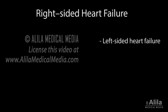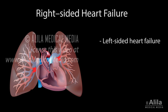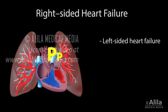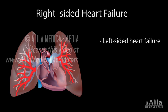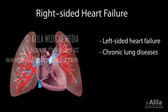Right-sided heart failure is most commonly caused by left-sided heart failure. This is because the increased pulmonary pressure caused by left-sided heart failure makes it harder for the right ventricle to pump into the pulmonary artery, resulting in systolic dysfunction. In compensation, the right ventricle grows thicker to pump harder, which reduces the space available for filling, eventually leading to diastolic dysfunction. Other common causes of right-sided heart failure include chronic lung diseases, which also raise pulmonary blood pressure.